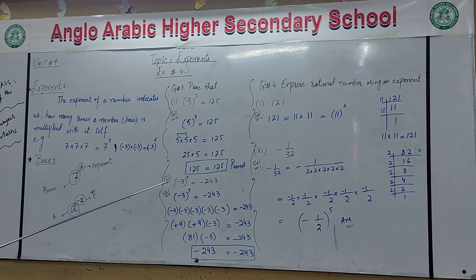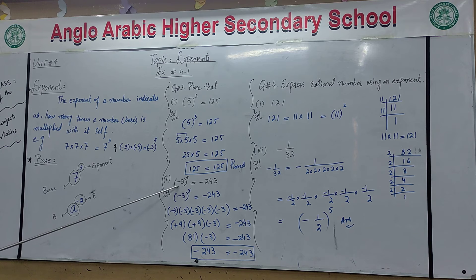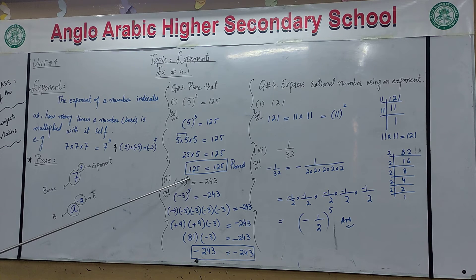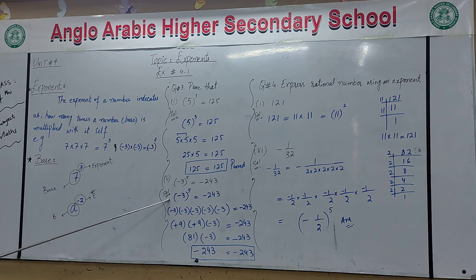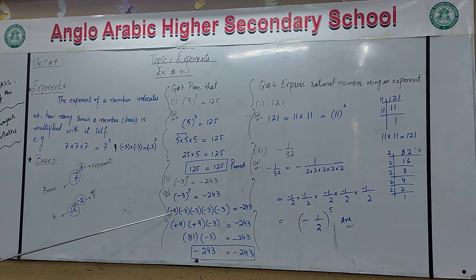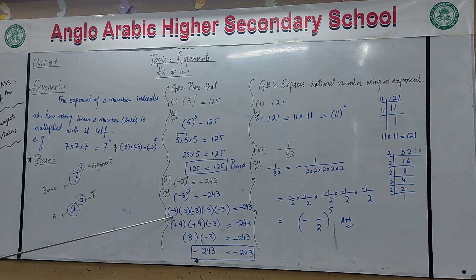Similarly, part two: the base is minus 3 and the exponent is 5, so the answer is minus 243. Now we do the solution. On the left hand side, you have minus 3 to the exponent 5, which means minus 3 multiplied by itself five times. Keep the right hand side as it is.